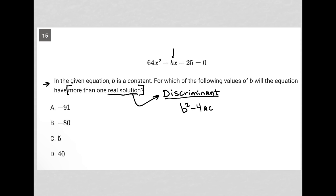Because if b squared minus 4ac is greater than zero, it means that you're going to have two real solutions, a.k.a. more than one real solution.